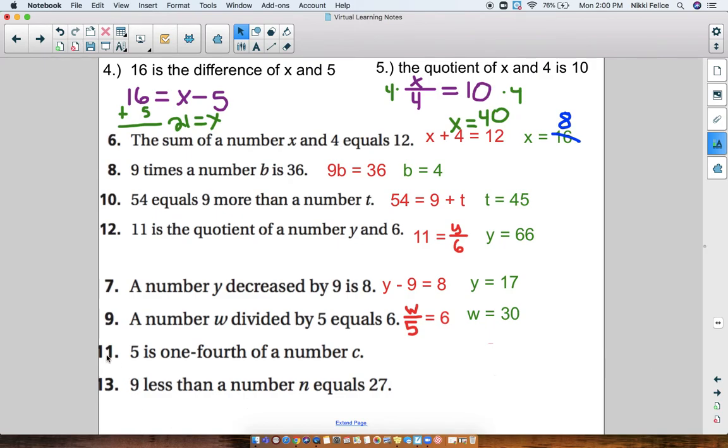Number 11 says 5 is 1 fourth of a number C. So there's two ways you could have written this. You could have written 5 equals 1 fourth C, or you can do 5 equals C divided by 4. 1 fourth is the same thing as dividing by 4. So both of these equations are okay. When we solve that, the inverse of division would be multiplication. You should get C equals 20.